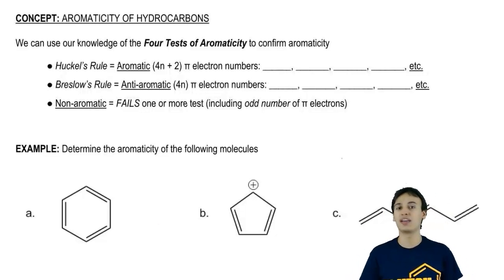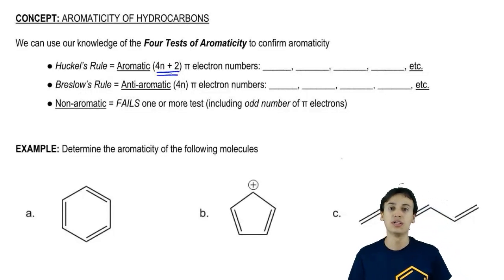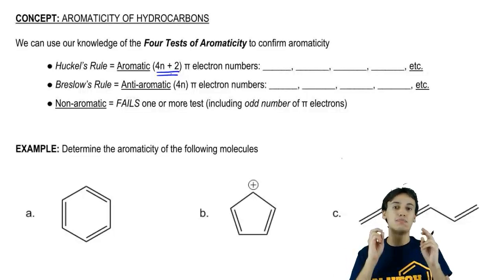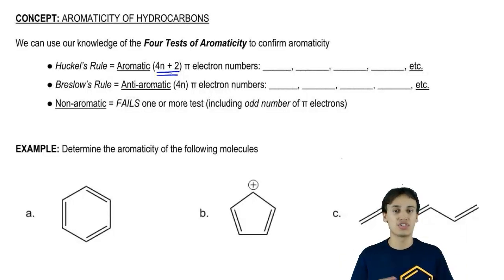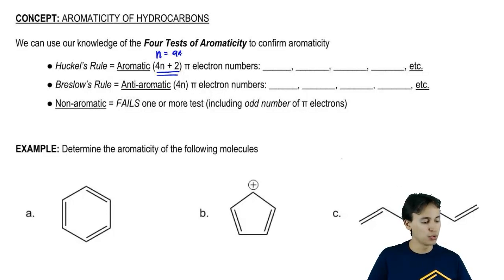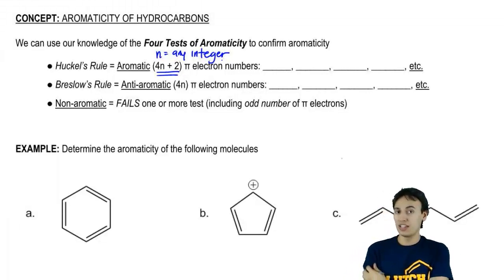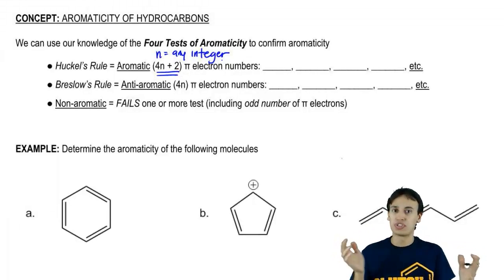So now we know how to count up pi electrons but 4n plus 2 is still kind of confusing. What does that mean? The whole reason that we have this idea of 4n plus 2 is because someone realized that 4n plus 2 would be an easy shorthand to memorize these magical numbers that make a molecule extra stable and therefore aromatic. The way it works is that n is equal to any integer, any whole number. When you make n equal to any integer, then what you do is you wind up getting these numbers that are the super stable numbers.